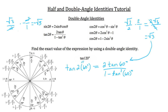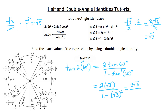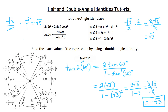Plugging root 3 in for tangent of 60 degrees: we have 2 times root 3 over 1 minus root 3 squared. That gives us 2 root 3 over 1 minus 3. Simplifying 1 minus 3 is negative 2, so we have 2 root 3 over negative 2. The 2s cancel, giving us negative root 3 — exactly what we got using the traditional method.